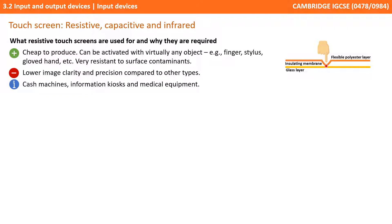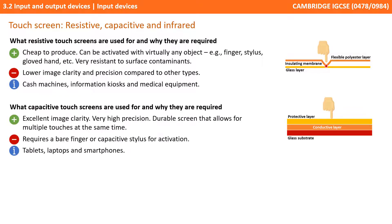Next, capacitive screens provide excellent image clarity and very high precision. The durable screen also allows for multiple simultaneous touches. However, they do require a bare finger or a capacitive stylus for activation. These are the screens you'll be most familiar with from tablets, laptops, and smartphones.